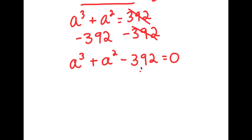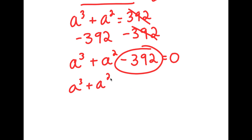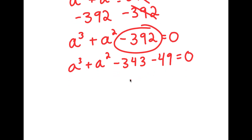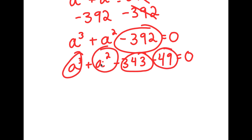Now from here, I can rewrite negative 392 as negative 343 minus 49. And the reason I did this was because 343 is something cubed, and 49 is something squared. And notice how we have something cubed and something squared.